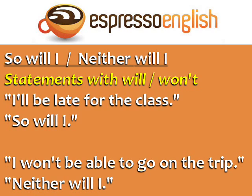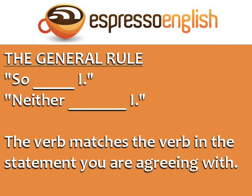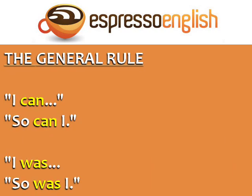The general rule is that the verb in the middle matches the verb in the statement you are agreeing with. So if the other person says 'I can,' you say 'so can I.' If the other person says 'I was,' your response is 'so was I.'